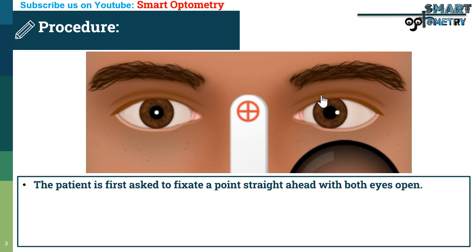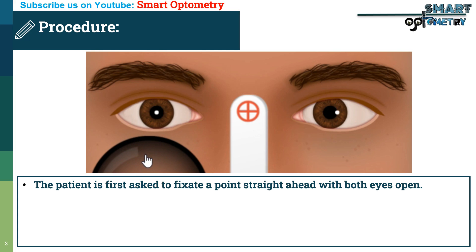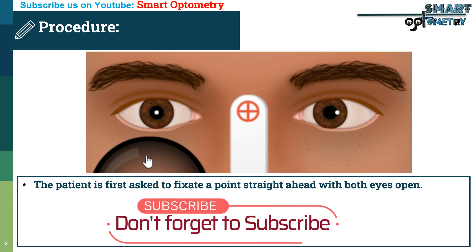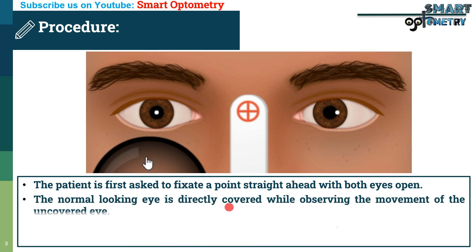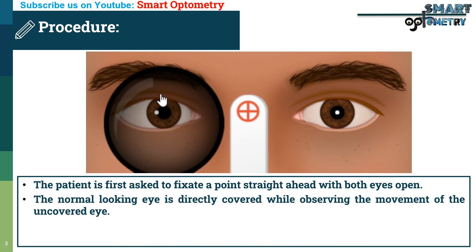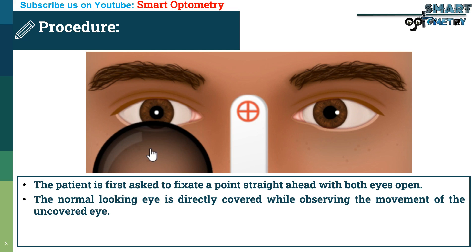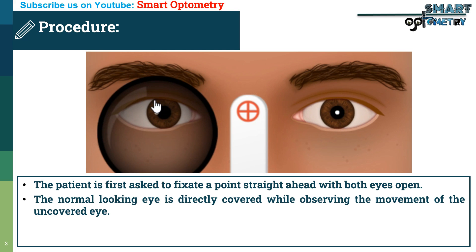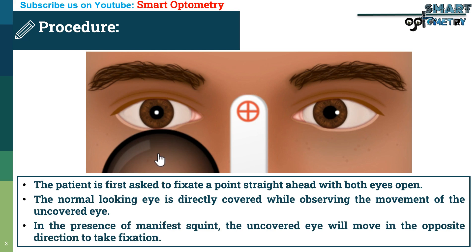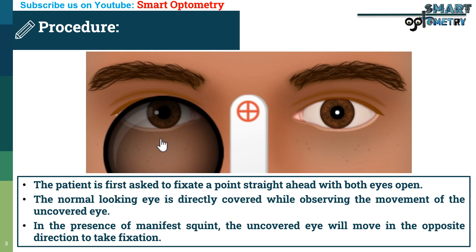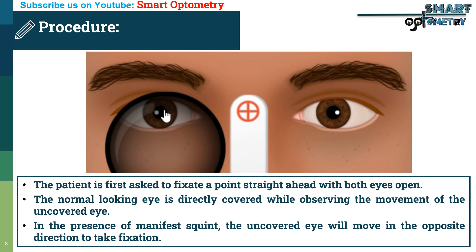Procedure of the Direct Cover Test: The patient is first asked to fixate a point straight ahead with both eyes open. The normal-looking eye, or fixating eye, is directly covered while observing the movement of the uncovered eye. In the presence of manifest squint, the uncovered eye will move in the opposite direction to take fixation.